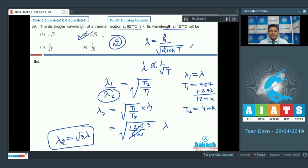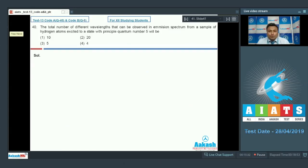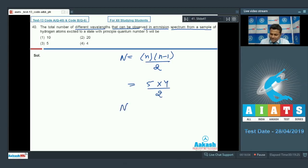So let's find out the option. We can say that option number 2 is absolutely correct, so we will go with option number 2 only. Now move on to the next, that is 40. Here is question number 40, everyone. The total number of different wavelengths that can be observed in emission spectrum from a sample of hydrogen atom excited to a state with principal quantum number 5. Now we know very well the number of spectral lines is given as capital N equals n times n minus 1 divided by 2, where n is the quantum number. Here n is 5 into 4 divided by 2, solving it gets you 10. So the answer will be 10, we have to go with option number 1.